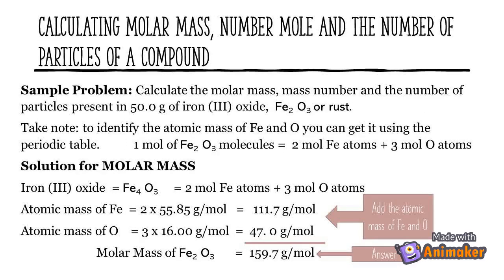Sample problem: calculate the molar mass, mass number, and the number of particles present in 50.0 grams of iron(III) oxide, or rust. Take note: to identify the atomic mass of iron and oxygen, you can get it using the periodic table. One mole of iron(III) oxide molecule is equal to 2 moles of iron atoms and 3 moles of oxygen atoms.